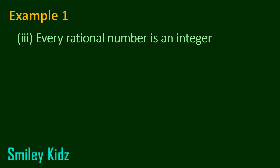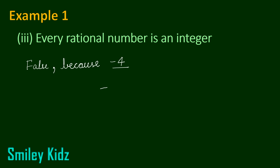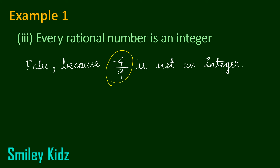Let's write it. This statement is false, because not all rational numbers are integers. But all integers are rational numbers, as we have seen in the previous statement. False — because, for example, minus 4 by 9 is not an integer. You can mention any rational number which is not an integer. This statement is false because not all rational numbers are integers, but all integers are rational numbers.